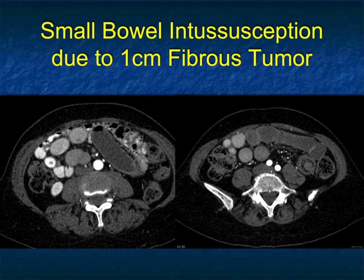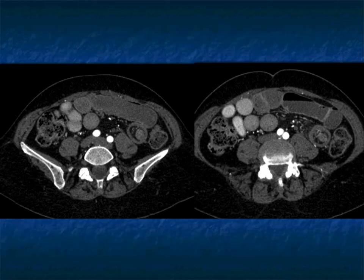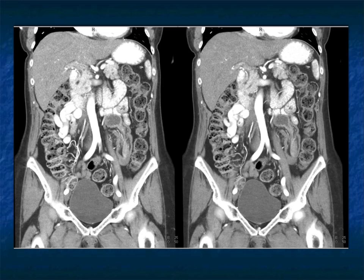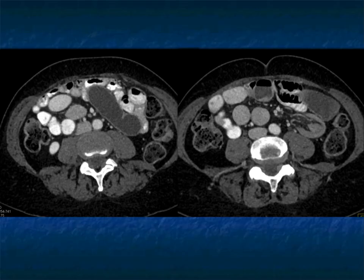Here's another patient — intussusception in the left lower quadrant with dilated bowel loops and abdominal pain. There's the intussusception, and there's the fat. This was surgically confirmed as a benign fibrous polyp. In terms of distinguishing malignant from benign — if the only process you're seeing is the intussusception, the answer is probably not possible. Obviously if the patient has lymphoma with extensive nodes or liver metastasis, that's easy. But we can say we see no reason for malignancy, though we could not exclude it. This patient had surgery, the tumor was resected, and did fine.